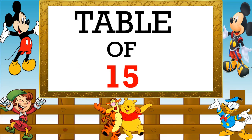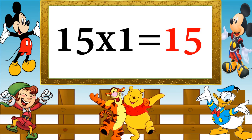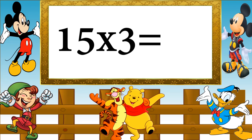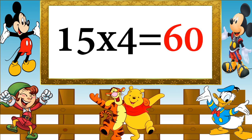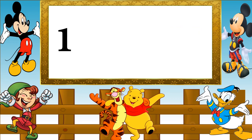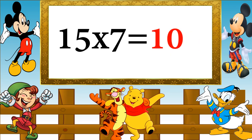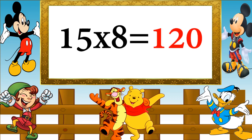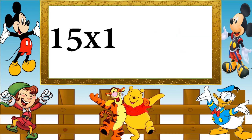Table of 15. Fifteen ones are fifteen, fifteen twos are thirty, fifteen threes are forty-five, fifteen fours are sixty, fifteen fives are seventy-five, fifteen sixes are ninety, fifteen sevens are one hundred five, fifteen eights are one hundred twenty, fifteen nines are one hundred thirty-five, fifteen tens are one hundred fifty.